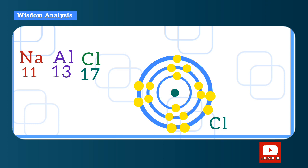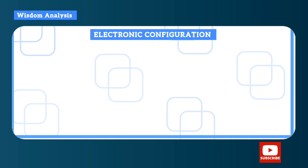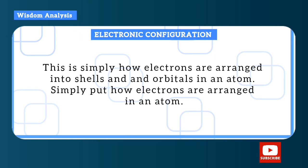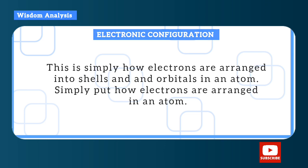Electronic configuration is simply how electrons are arranged into shells and orbitals in the atom — simply put, how electrons are arranged in an atom.